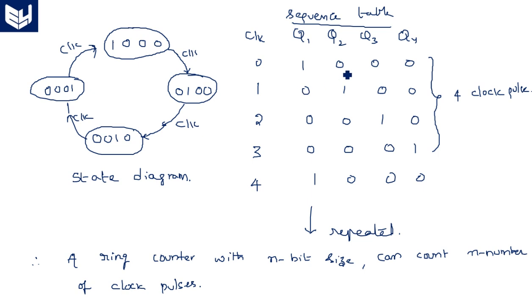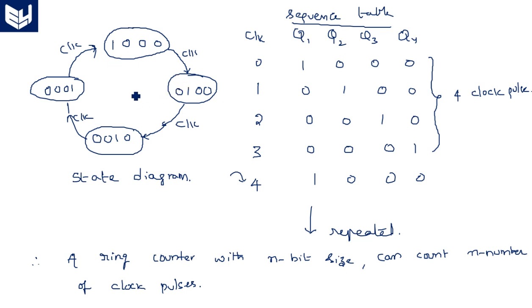There are four clock pulses taken from zero to one. Zero is the initial state, and when you reach the final state after applying the fourth clock pulse, it automatically gives you the repeated sequence. This sequence can be represented in a state diagram or sequence diagram. All states are represented in a ring shape — that's what is a ring counter.